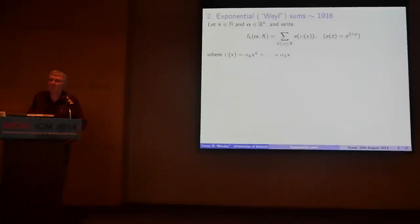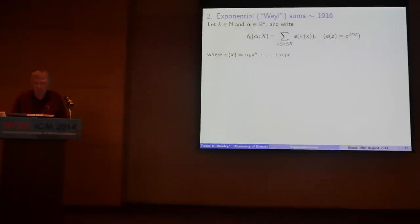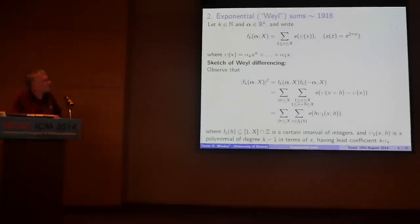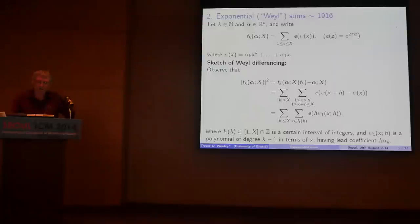This all goes back to work of Hermann Weyl almost a century ago. Weyl was interested in these exponential sums for purposes of equidistribution results, so they're also called Weyl sums as well as trigonometric sums. Weyl's method is one of the most natural approaches to bounding these exponential sums. Linear exponential sums — degree one — are a trivial situation because if the argument of the exponential sum is linear, this is basically a geometric progression, and you know how to sum a geometric progression.